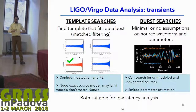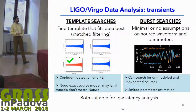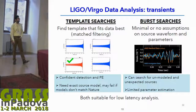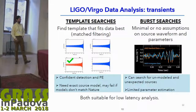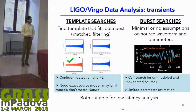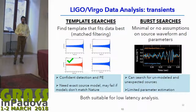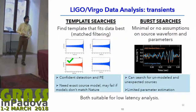We have template searches that use a matched-filter approach, but on the other hand we have burst searches that make minimal or no assumption on the source waveform, the model, or the parameters of the source. These are perfect for searching for unmodeled physics and unexpected sources. They will be slightly limited in parameter estimation compared to template searches, but they are still very robust statistically speaking, and both approaches are suitable for low-latency analysis.